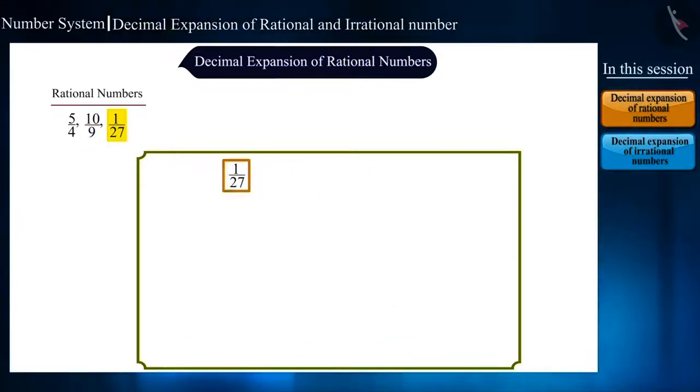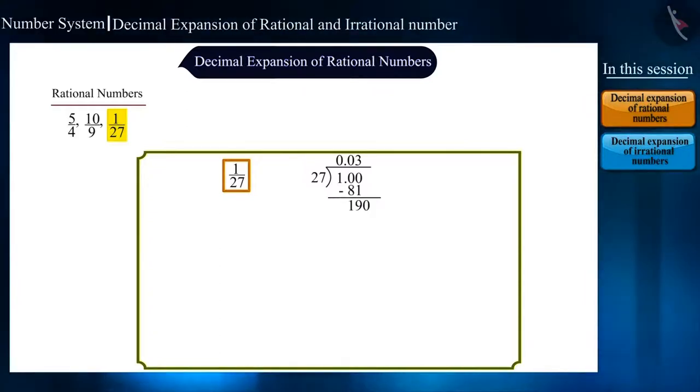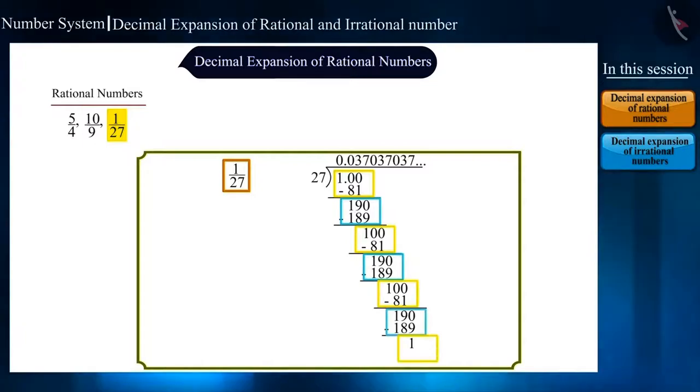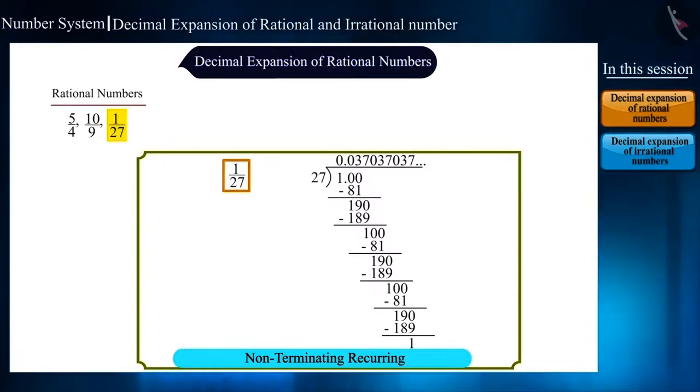If we look at the third example, 1 by 27. Here too, the remainder is not 0. If we look at this division carefully, after the third step, we are getting the same remainder again. If we solve this further, then the same three steps are being repeated. And now, if we look at the quotient, then we realize that just like there is repetition in the remainder, there is a repetition of 0.37 group of digits in the quotient after the decimal point. So, can we call this decimal expansion also non-terminating or recurring? Yes, and we will write it as 0.037 bar.